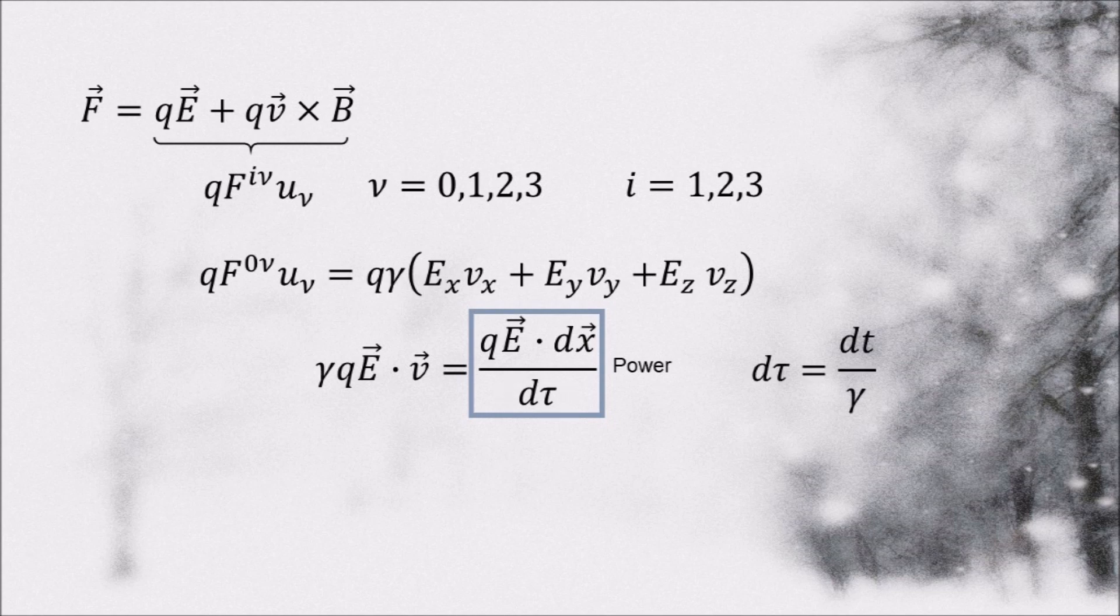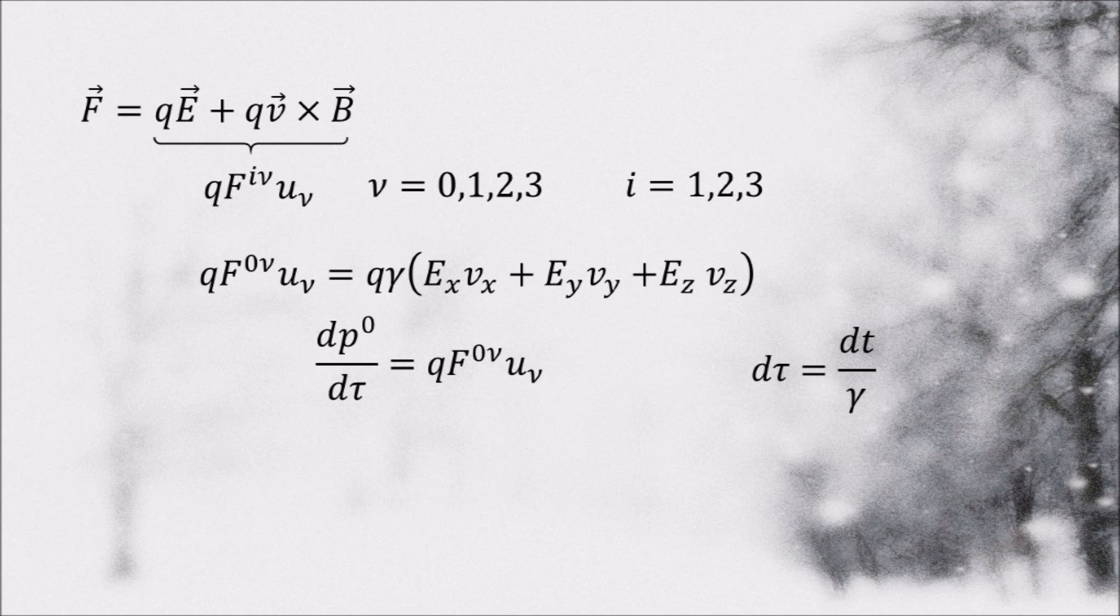So, we can write down the time component like this, where P0 is the relativistic energy of the particle.